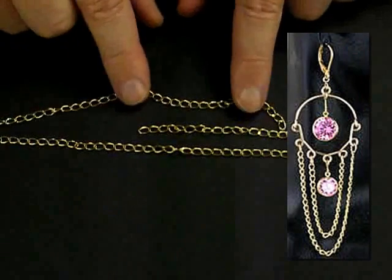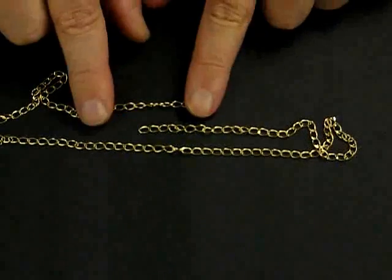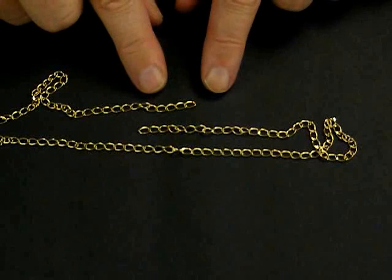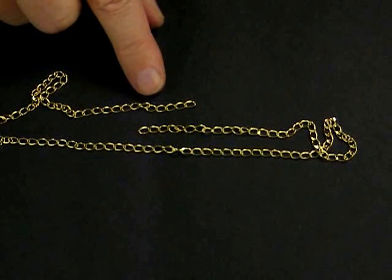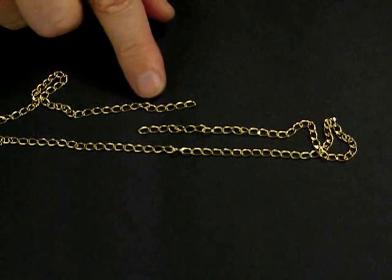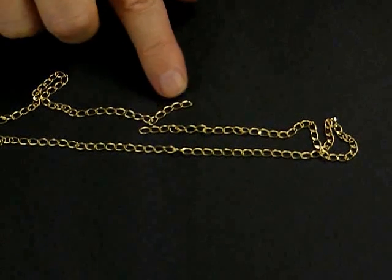When you order chain, you need to make sure that you understand whether the chain is going to have a clasp on the end or not. You can purchase it both ways. Obviously, if it has a clasp on the end, you need to make sure the clasp is going to be the right size to get through whatever you need it to get through in order to make your necklace. And that's chain as a jewelry finding.